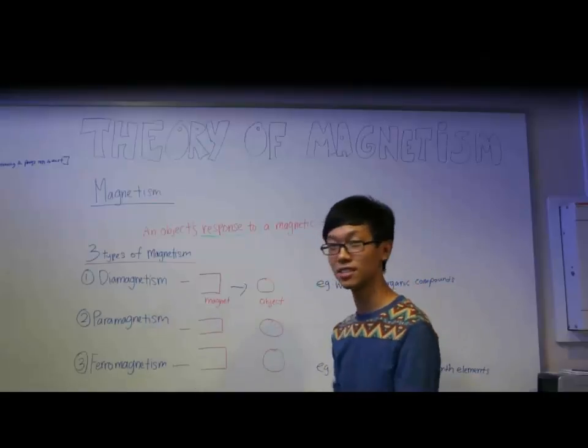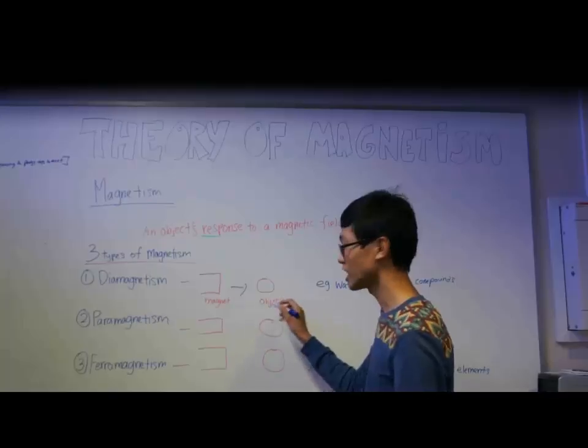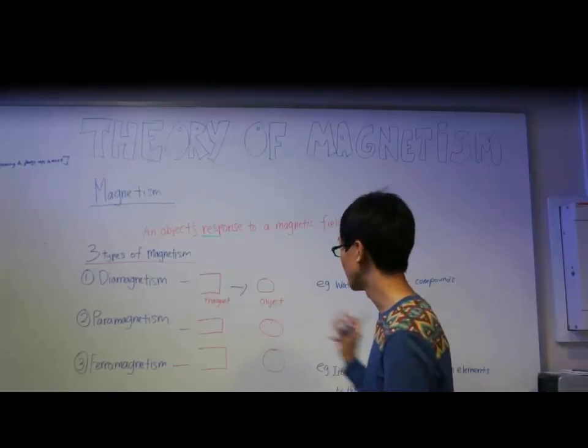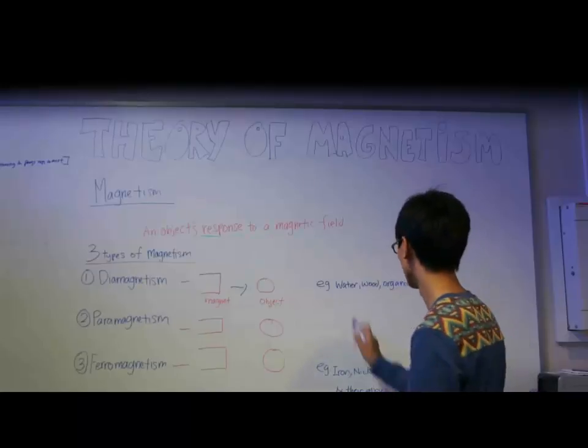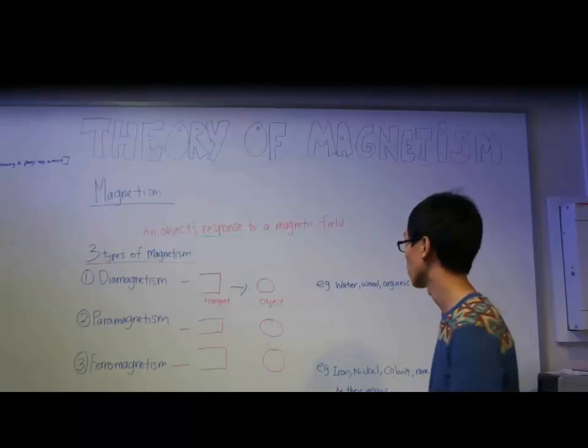The first one is called diamagnetism, whereby an object is placed near a magnet, it will actually repel away from it. Examples of diamagnetism are water, wood, and organic compounds.